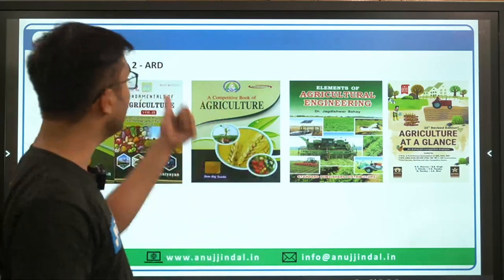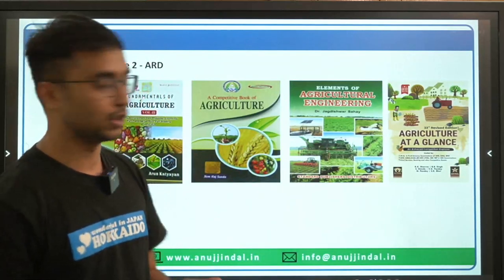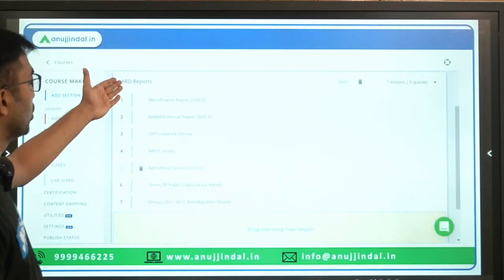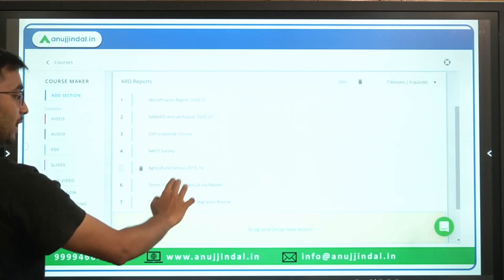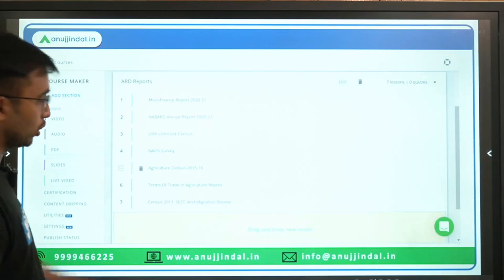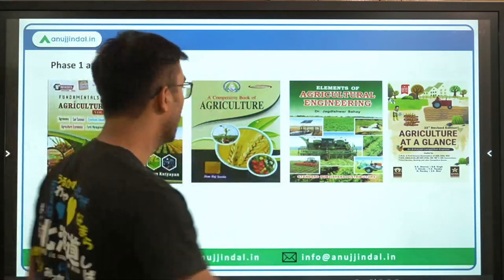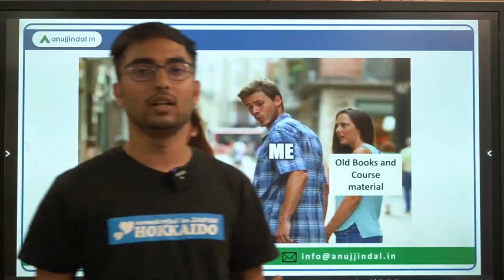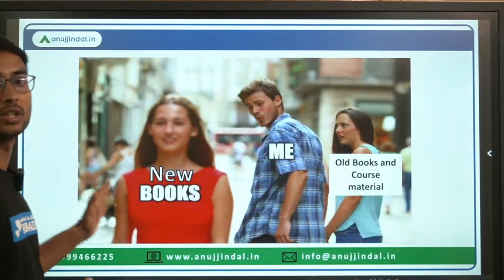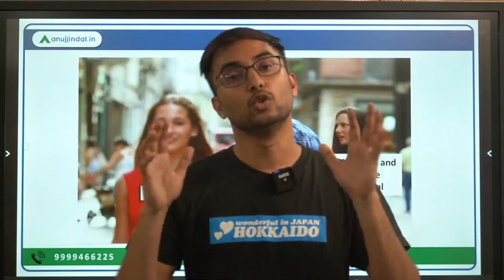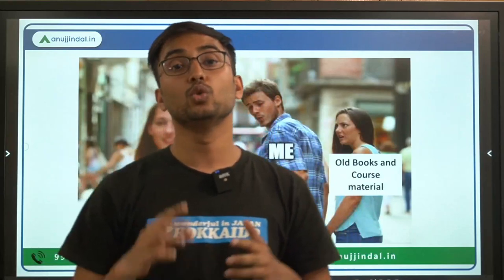For ARD-related reports and current affairs, rely on Kurukshetra magazine, the NABARD website, and various agriculture updates. The course also specifically provides ARD reports including: microfinance report, NABARD annual report, 20th livestock census, NAFIS report, agricultural census, terms of trade in agriculture report, Census 2011, SECC, and migration review. The key takeaway is to depend on your minimalistic book list and course material, and not run after new books — because collecting notes from many sources will not help you revise and reproduce content in the exam.